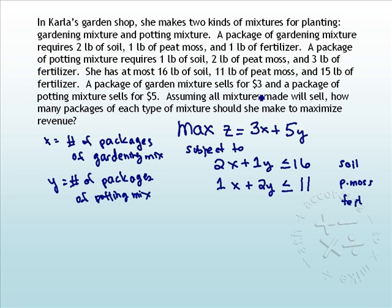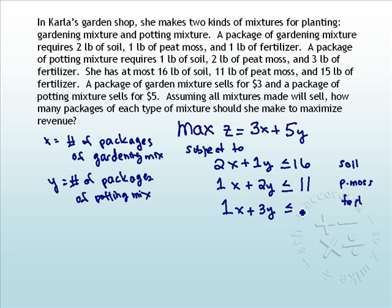Now for fertilizer. Gardening needs one pound of fertilizer, and potting needs three pounds of fertilizer. She has at most 15 pounds of fertilizer — that's a lot of fertilizer — giving us the constraint X + 3Y ≤ 15.